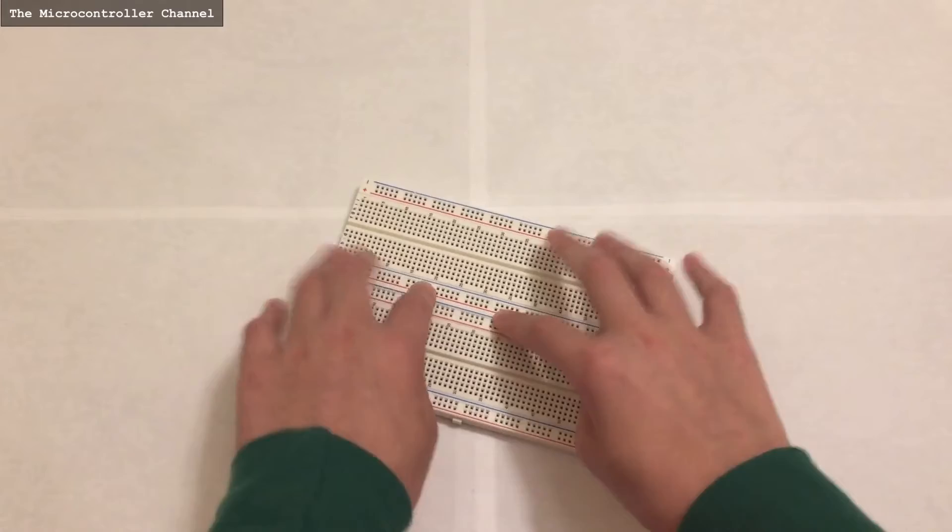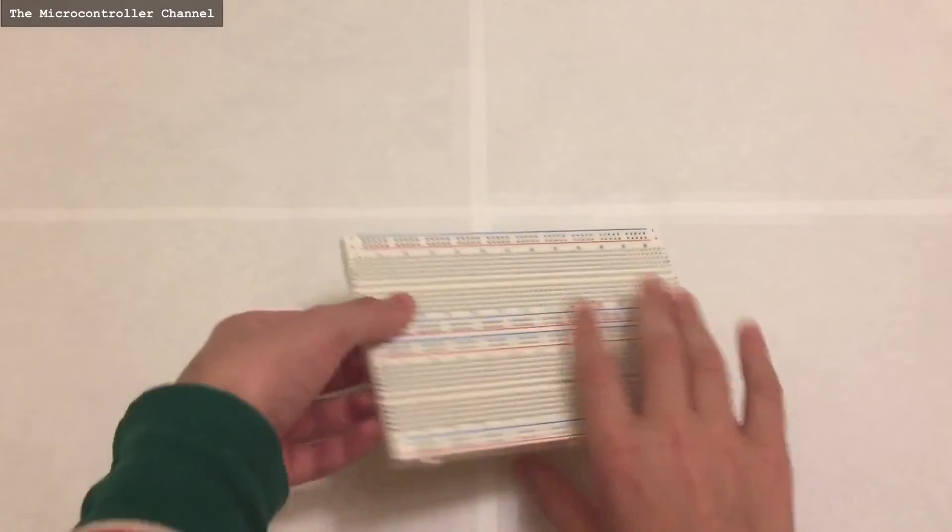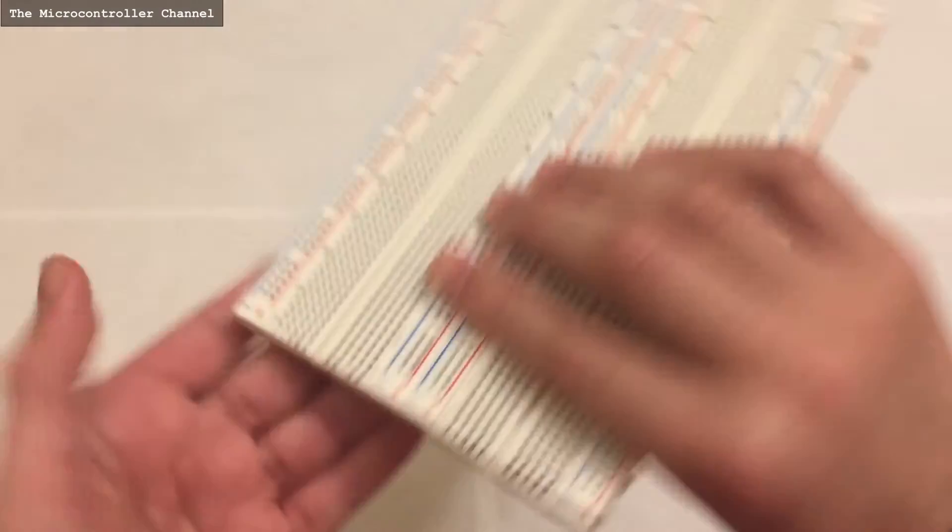Now all you have to do is put it on the table and press along this ridge. So now it becomes a flat big breadboard.